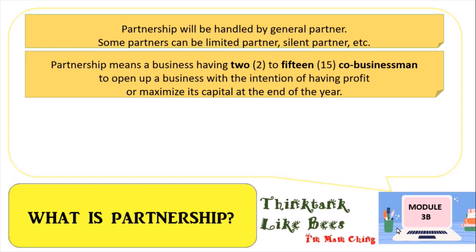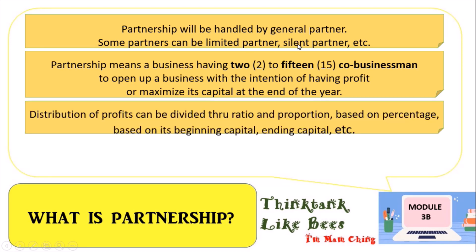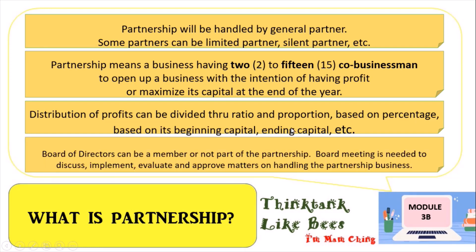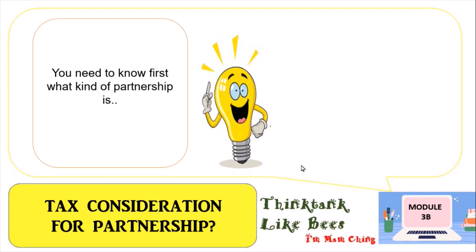A partnership will be handled by a general partner. Some partners can be limited or silent partners. Distribution of profits can be divided through ratio and proportion — it can be based on percentage, beginning capital, or ending capital. The board of directors in a partnership business can be a member or not a part of the partnership. Board meetings are needed to discuss, implement, evaluate, and approve matters on handling the partnership business. You need to know first what kind of partnership it is.